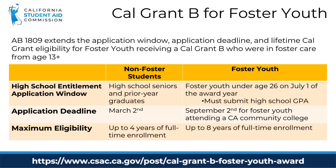The Cal Grant B has a new component for qualifying foster youth. AB 1809 expanded eligibility for Cal Grant B recipients who are in foster care on or after age 13 in three ways. First, it increases the age limit to be considered a high school entitlement applicant from age 23 to 26. Second, it extends the Cal Grant application deadline for foster youth attending a California Community College from March 2 to September 2. And third, the most significant change is that it expands the lifetime Cal Grant eligibility from four years to eight years.